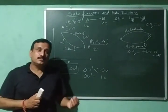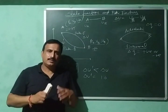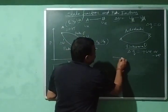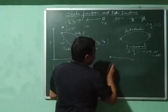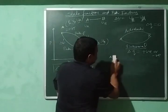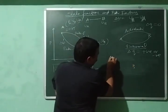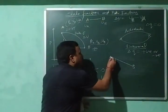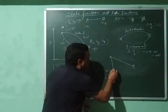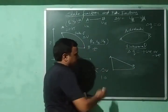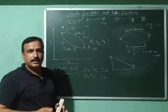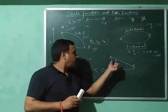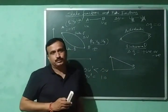Now let us discuss how work is a path function. Suppose I am moving from A to B — I can follow one direct path or a different, longer path. The work done will be different: along a shorter path, less work is done, and along a longer path, more work is done.